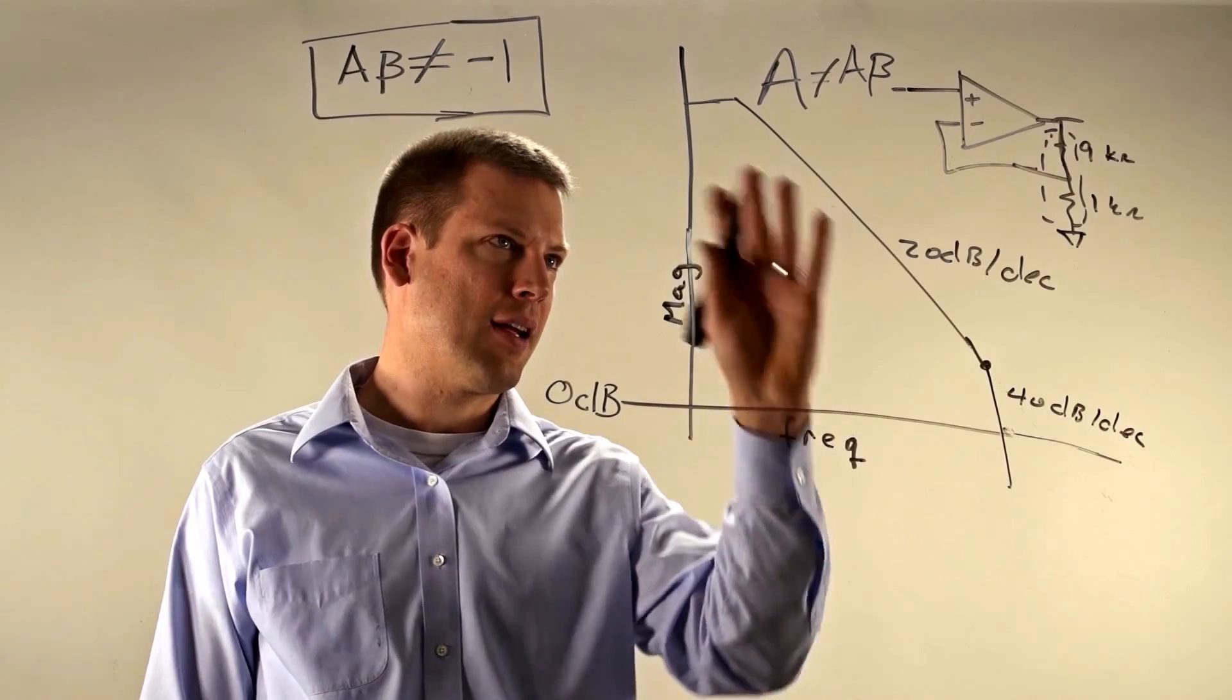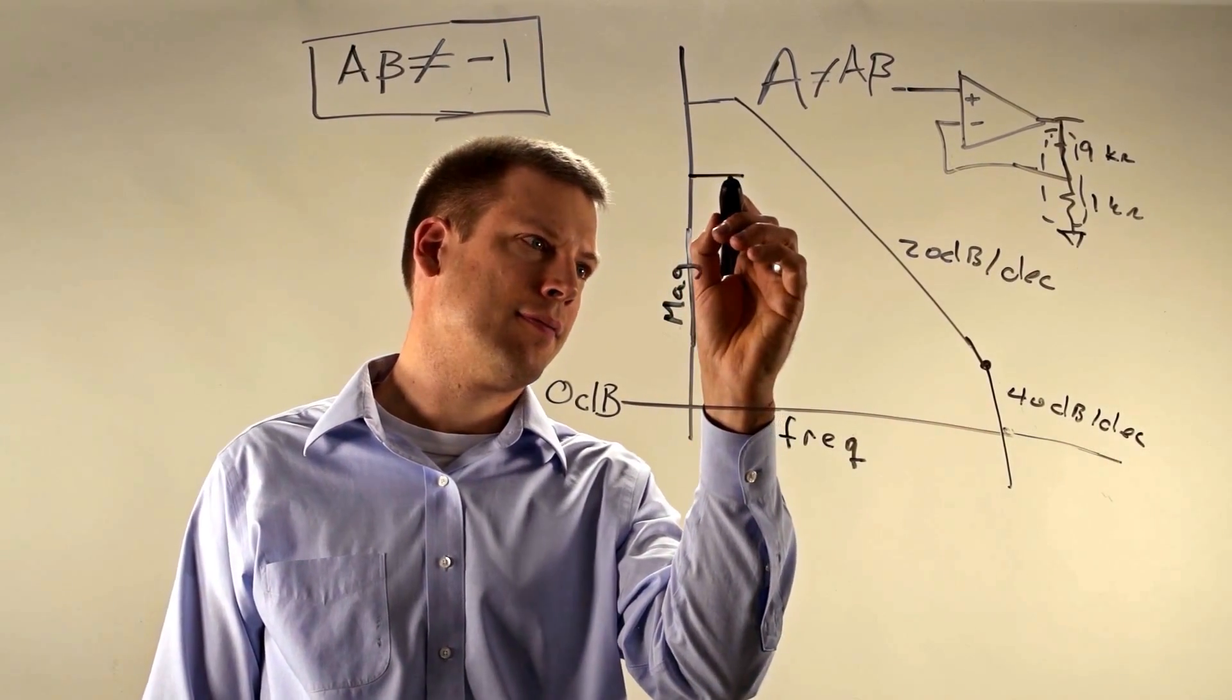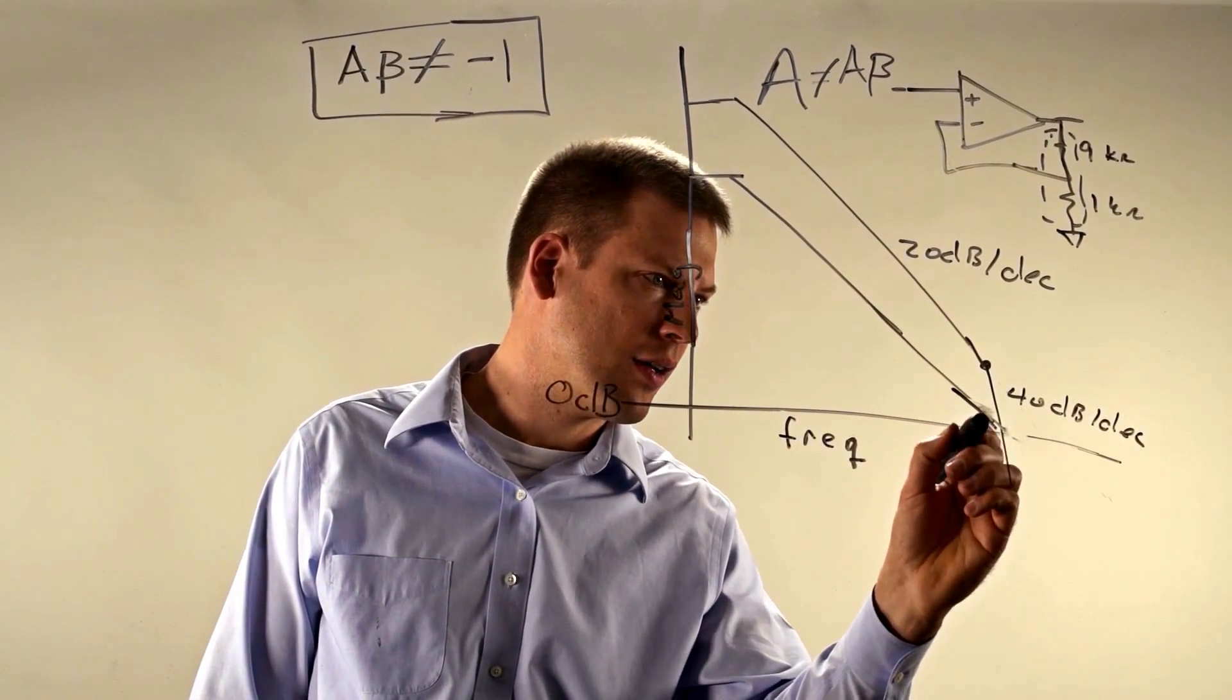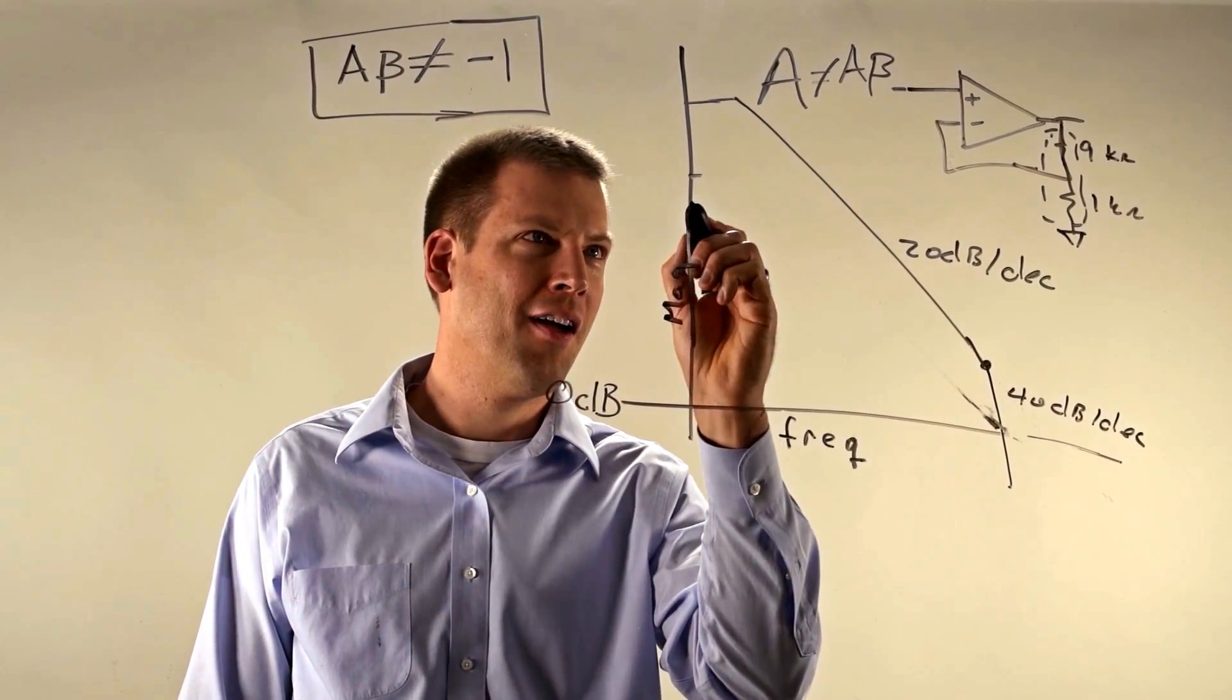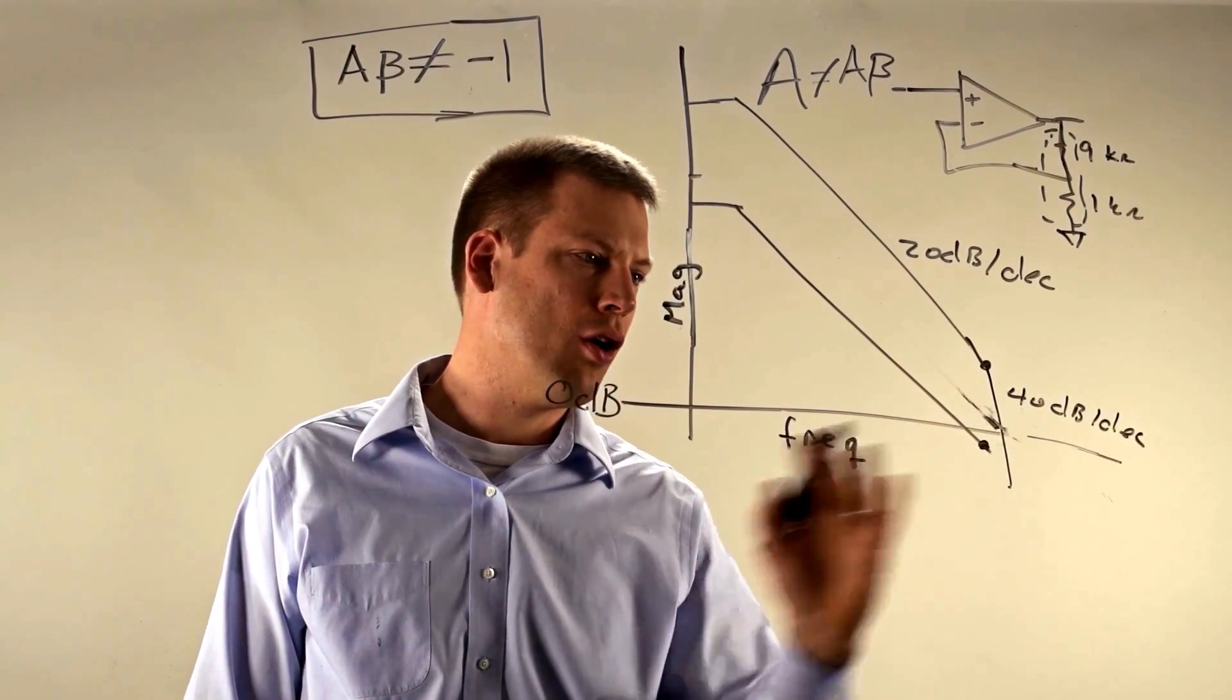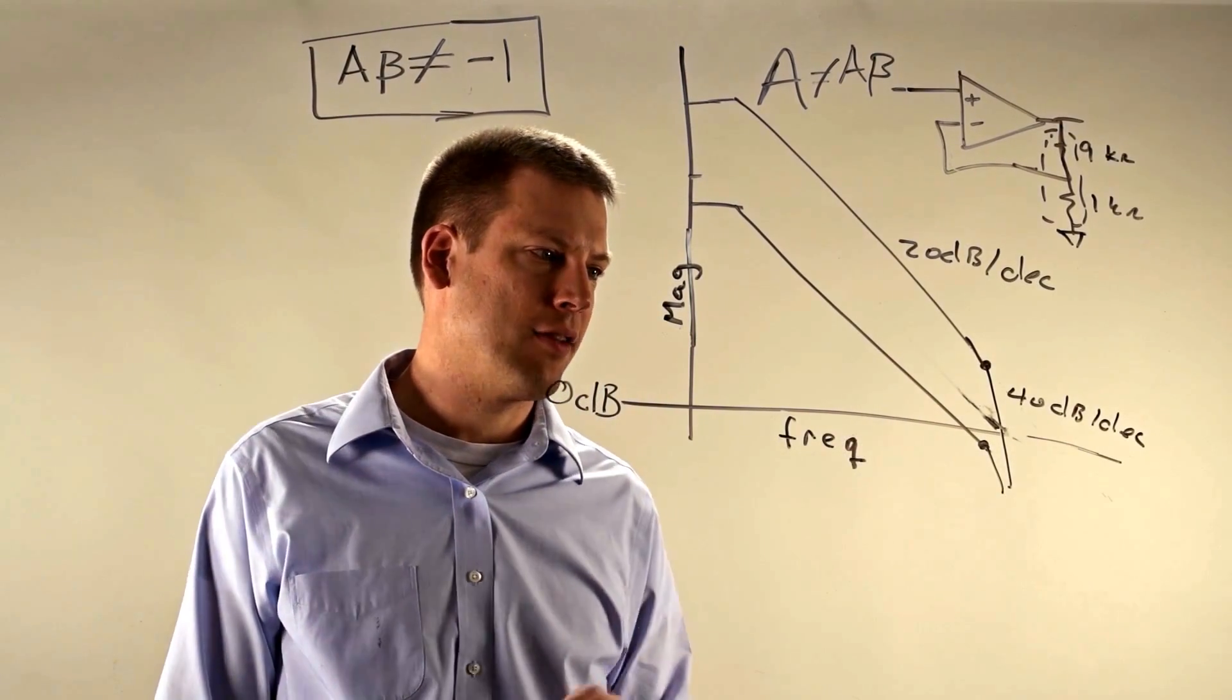So what ends up happening is instead of having this graph, you shift it down by say 20 dB. And hopefully when I draw it here, it will end up where we want. Let's pretend that we're shifting it down a little bit further. So what will end up happening is we have our pole down here below the 0 dB line before we make our shift to the 40 dB per decade slope.